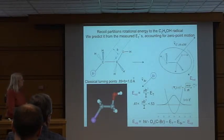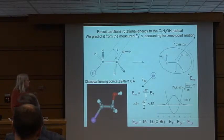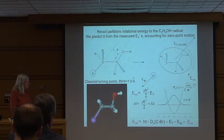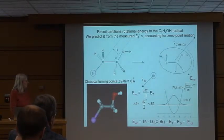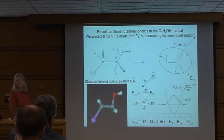That vibrational averaging changes the impact parameter and changes the amount of rotational energy in the radical. Then for energy conservation, you subtract off the internal energy of the radical — its rotational and vibrational energy — and you can estimate and subtract out the rotation.